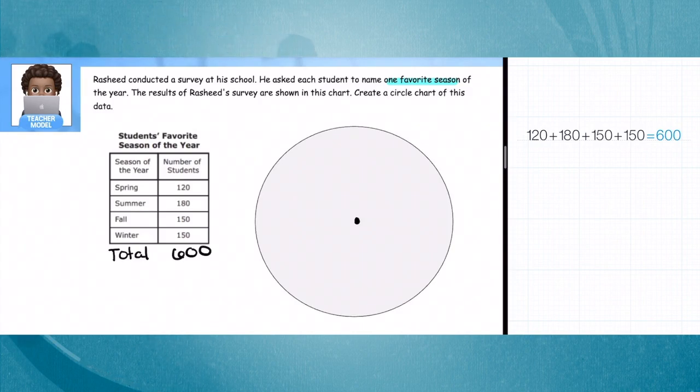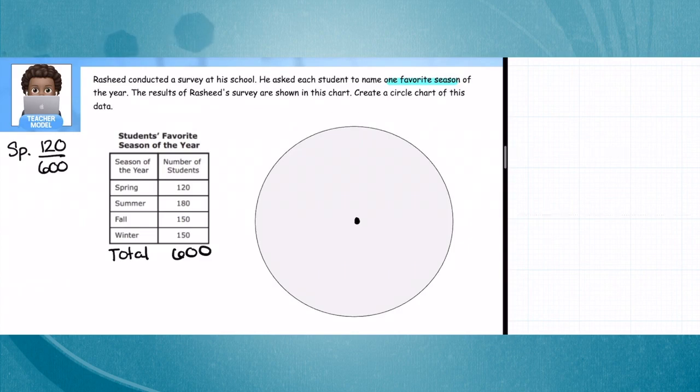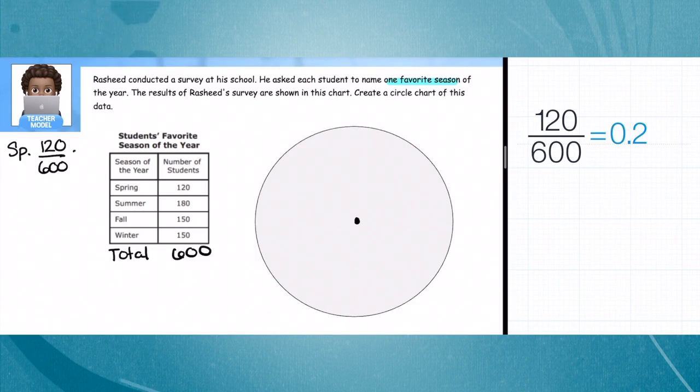We have 120 out of 600. I'm going to give some choice here. We could either turn this into a decimal and to a percent, or you can use a ratio table to find a percentage. I kind of just want to turn this to a decimal and a percent. So let's do that: we'll do 120 divided by 600, and that is 0.20 or 20%. We'll do the same thing with summer.